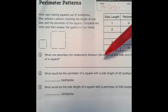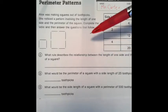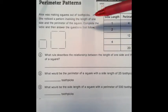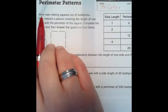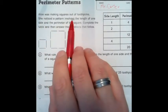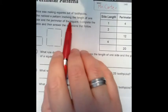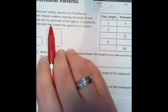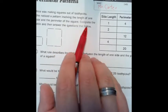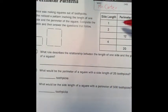So we're talking about perimeter patterns and just the relationship within certain numbers. We're going to take a look at the problem. Alice was making squares out of toothpicks. She noticed the pattern involving the length of one of the sides and the perimeter of the square. So complete the table and then answer the questions below.